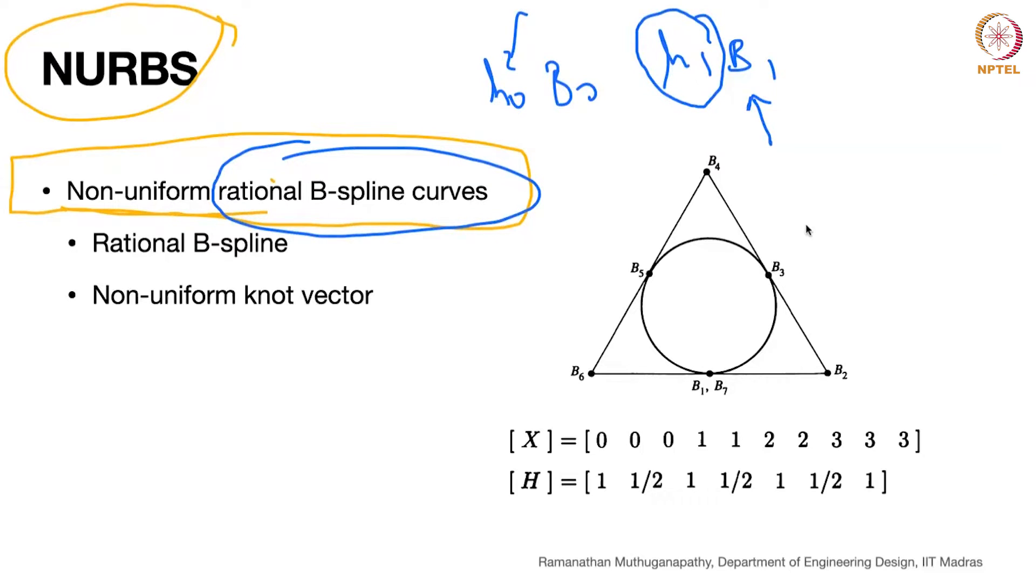The non-uniform also does something very similar. Remember the parameterization 0, 1, 2, 3? I had three curves. I am collapsing one of them to become a curve of zero length, that means it will pass through that particular point. So I am combining the idea of repeating and the weights.